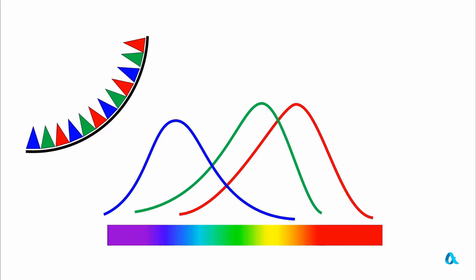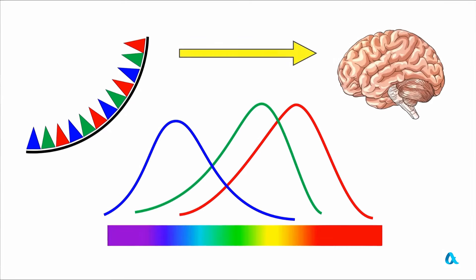Each cone sends its signal to the brain, and the brain processes these signals and tells itself something like this: The blue signal from this area of the retina is weak, while the green and red signals are equally strong, so here I see the color yellow.